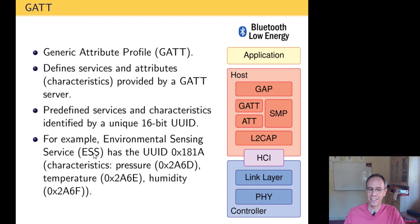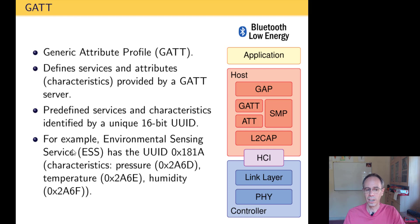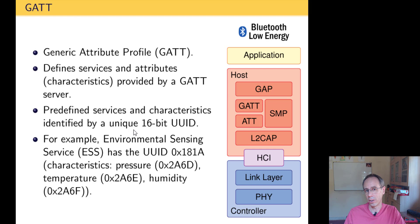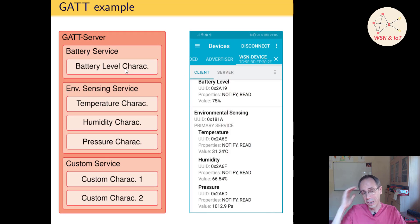Every service has attributes — we call these characteristics in Bluetooth Low Energy. For example, the Environmental Sensing Service has three characteristics: pressure, temperature, and humidity, each with a predefined UUID. There is a document where you can see the different kinds of services and predefined characteristics. With every predefined characteristic there is a special data type defining how the data is stored. You can also implement custom services — they use a 128-bit UUID, and there are online generators for creating custom IDs.